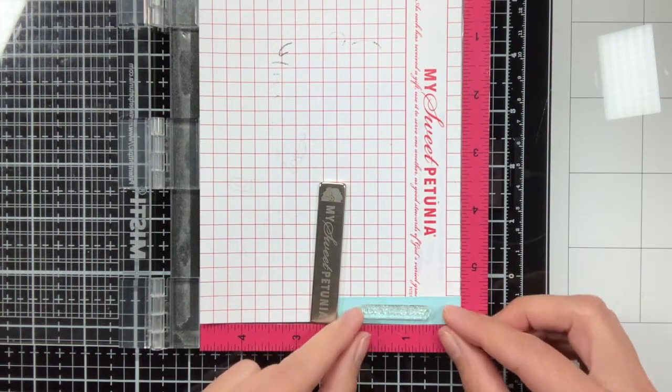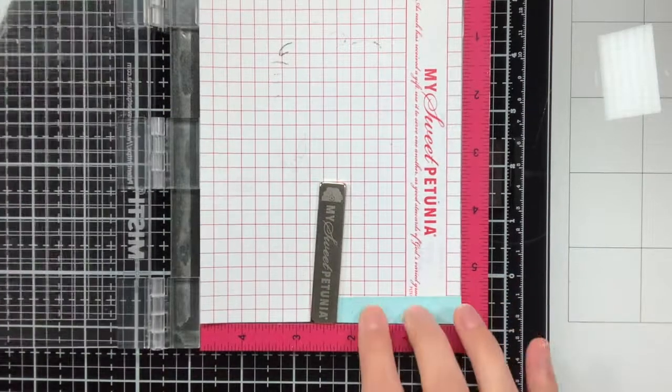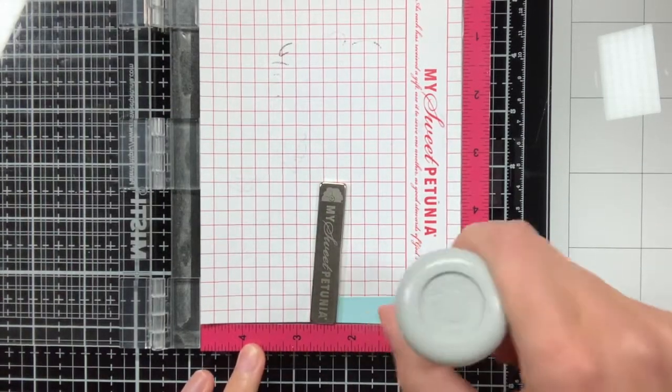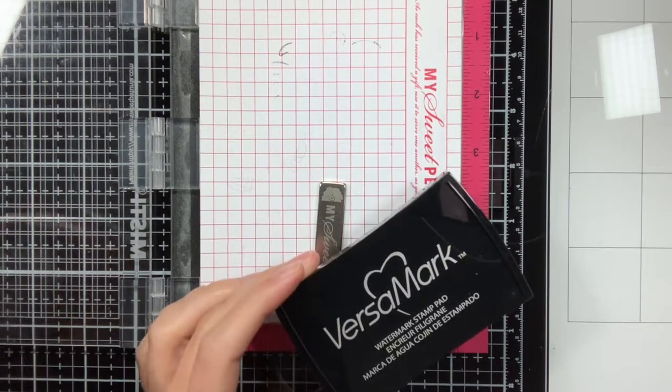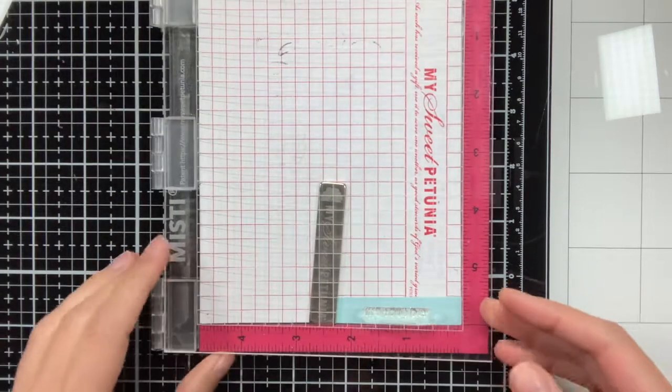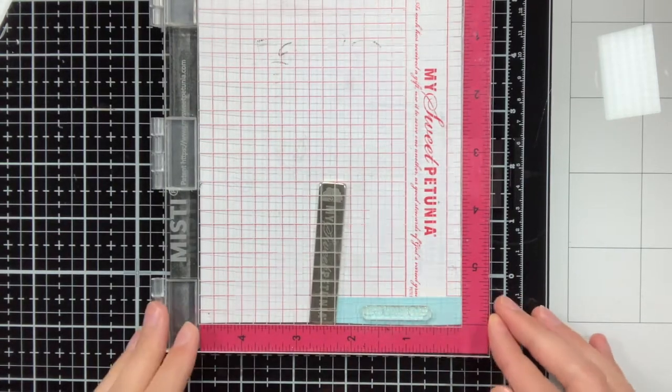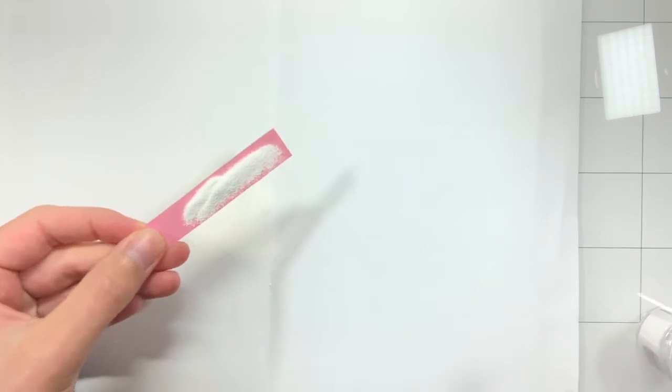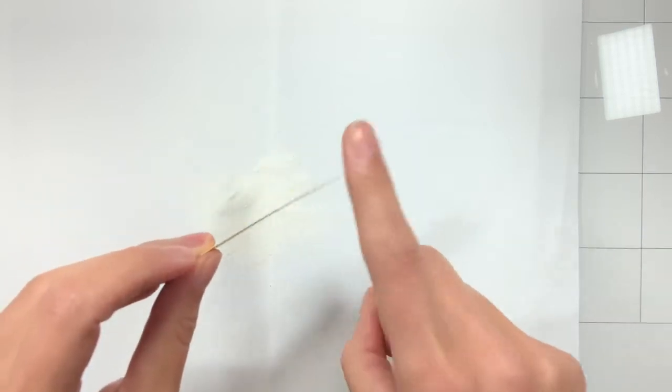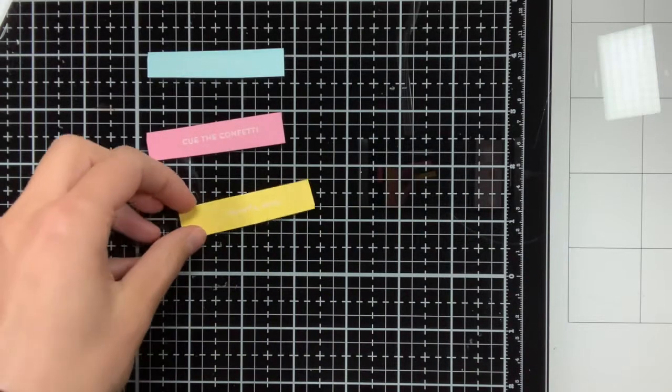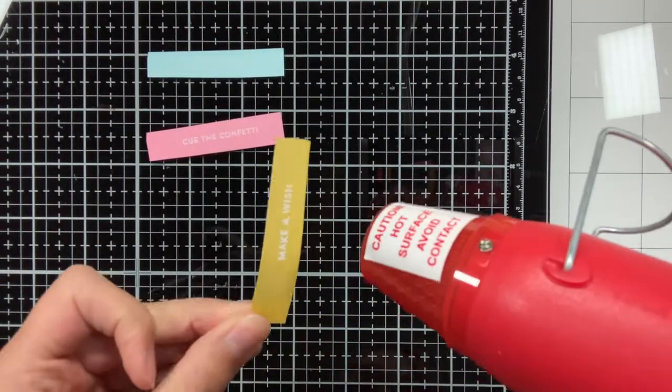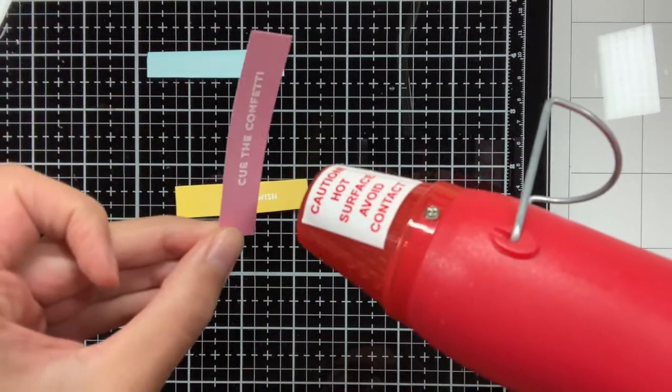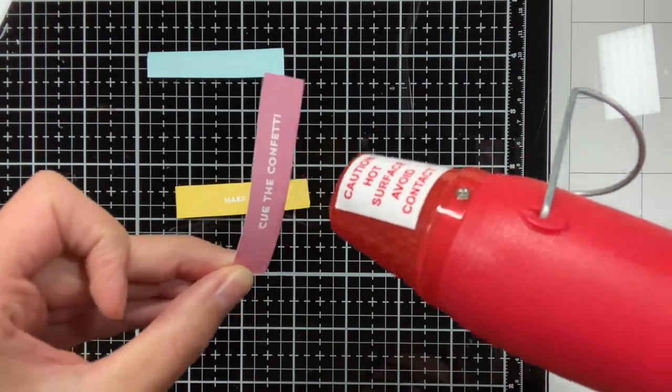The paper you see me using here is actually pattern paper from the Really Rainbow Collection pack. As I'm going to do some heat embossing, I'm first preparing the cardstock with an anti-static powder tool. And now I'm stamping the sentiment with VersaMark ink. After this I will coat my sentiment strips in white embossing powder. The colors of pattern paper I chose are blue, pink and yellow, and these colors also match nicely with the coloring of the cupcake I did earlier.